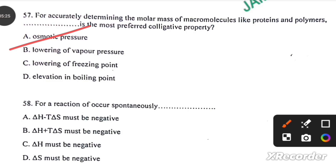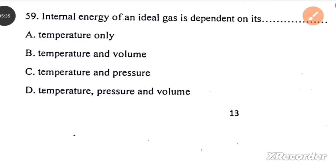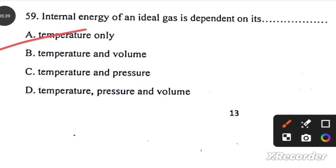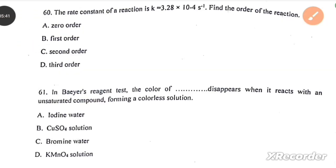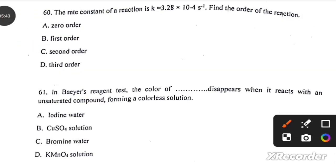For a reaction to occur spontaneously, enthalpy change must be negative. Internal energy of an ideal gas is dependent on its temperature only. The rate constant of a reaction is this, then find the order of the reaction. First order.